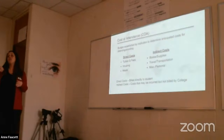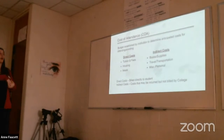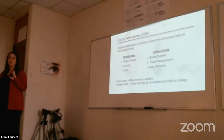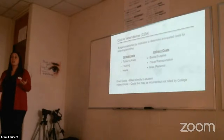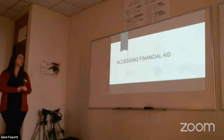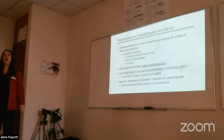Direct costs are things you will be billed for on your student statement — tuition, fees, housing, meals. At Benedictine, books fall into our indirect cost budget. Indirect costs include things like books, supplies, travel or transportation to and from school, and miscellaneous personal expenses. For example, if a student has an illness and needs medication while at school, we can build that cost into their Cost of Attendance.